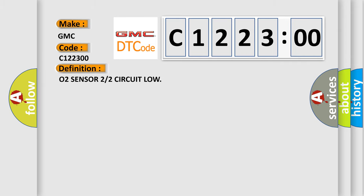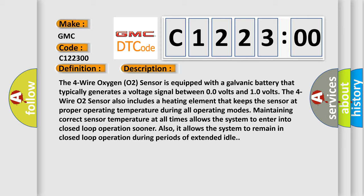The basic definition is O2 sensor 2/2 circuit low. And now this is a short description of this DTC code. The four wire oxygen O2 sensor is equipped with a galvanic battery that typically generates a voltage signal between 0.0 volts and 1.0 volts.